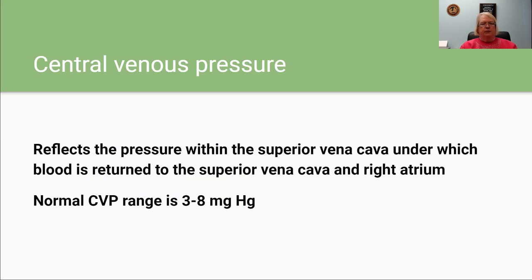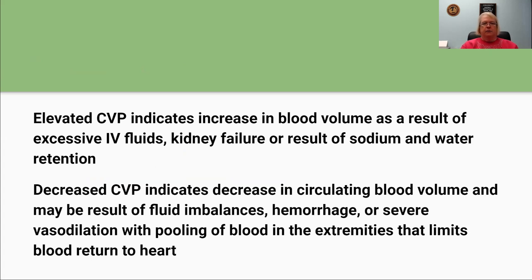Central venous pressure reflects the pressure within the superior vena cava under which blood is returned to the right atrium. The normal range is 3 to 8. Elevated CVP indicates an increase in blood volume from excessive IV fluids, kidney failure, or sodium and water retention. Decreased CVP indicates decreased circulatory blood volume, which may result from fluid imbalances, hemorrhage, or severe vasodilation with pooling of blood in the extremities.